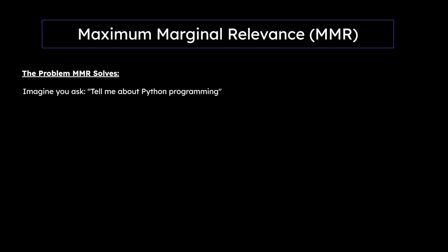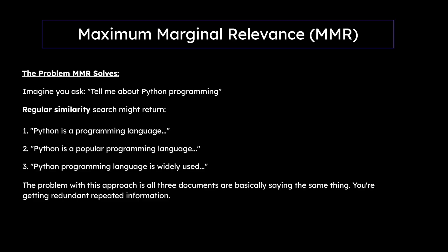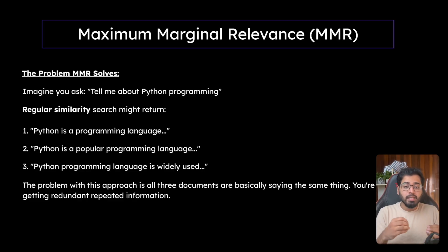Here is the problem that MMR solves. Imagine you ask 'tell me about Python programming.' A regular similarity search might return: 'Python is a programming language' as the first chunk, 'Python is a popular programming language' as the second chunk, and 'Python programming language is widely used' as the third chunk. The problem is all three documents are basically saying the same thing — we are getting redundant, repeated information. If all the chunks retrieved are very close to each other in similarity, it would actually be beneficial if they were a little different so the LLM has more context to work with.